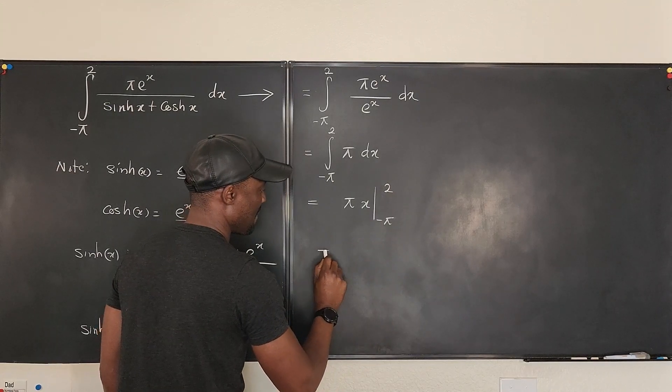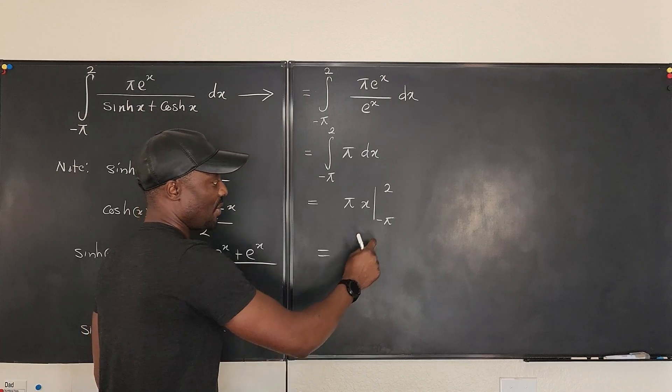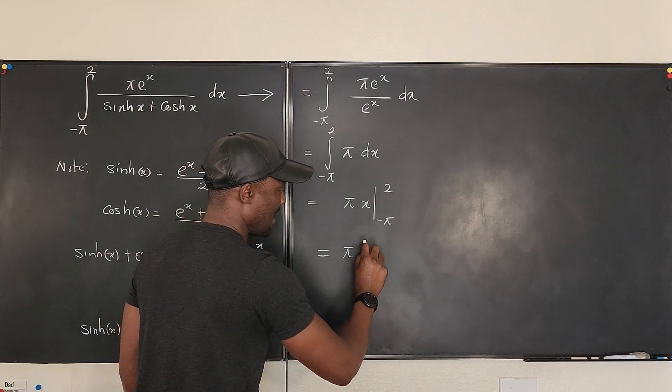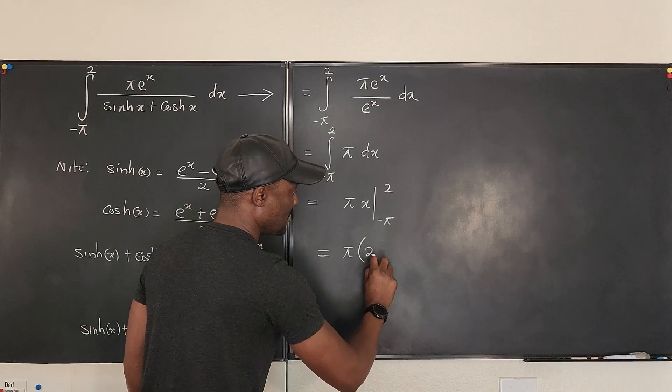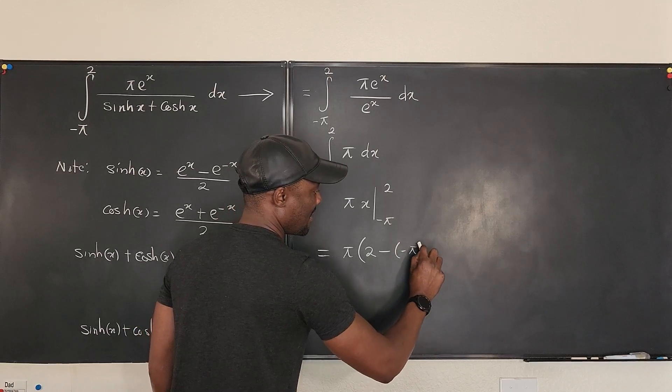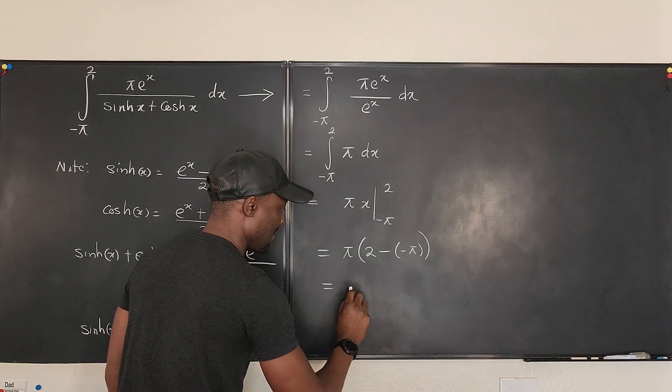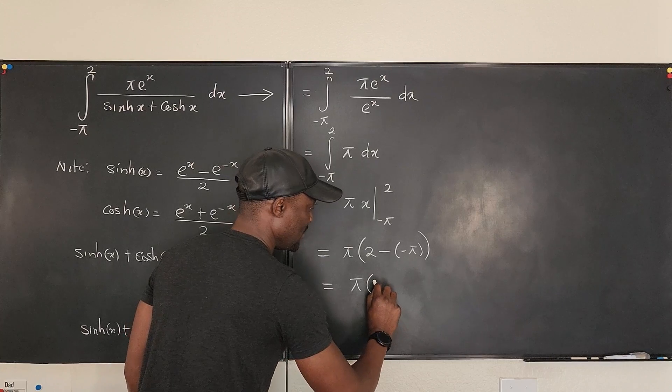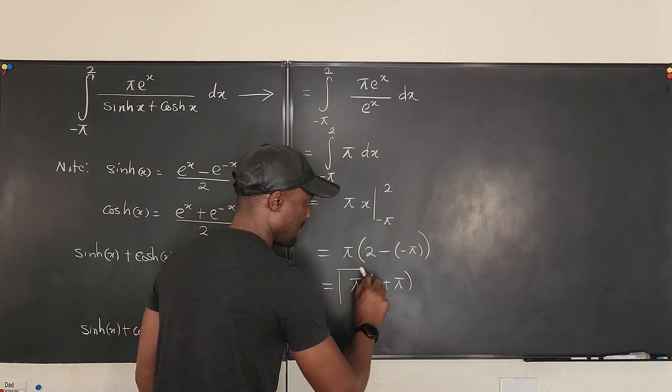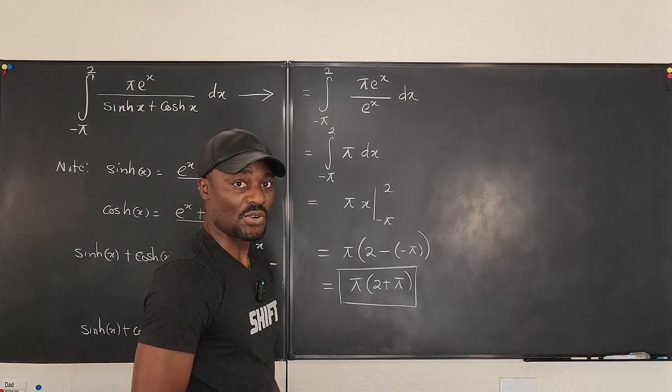And what does that give me? Well, if I plug in 2 here, it's going to be π times 2 minus negative π. Well, that gives me π times 2 plus π. This is the integral we're looking for.